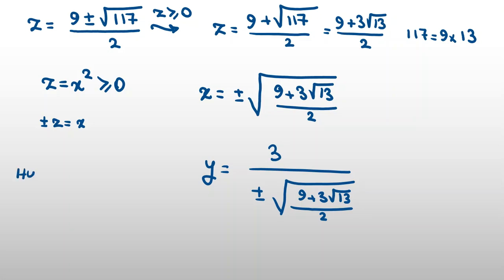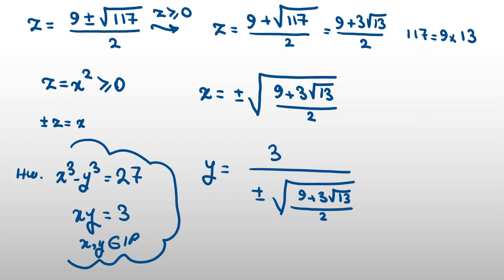So, let me write one other homework. The homework is this. x cubed minus y cubed equal to 27. And this part, xy equal to 3. Solve in real numbers. X and y are real. And try to see what x and y are. You can comment your answers right below this video. Thank you.